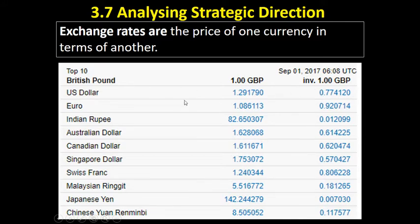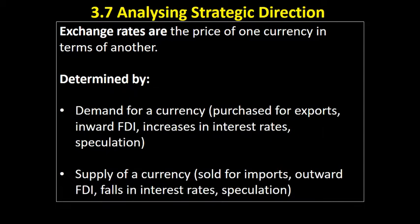On the other hand, one dollar will buy me 77 pence, one euro buys me 92 pence, etc. However, these exchange rates are changing all the time. Why? Because just like any other product, the price of currencies is always changing, and it is determined by both demand and supply of a currency.